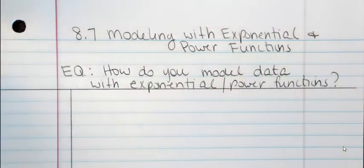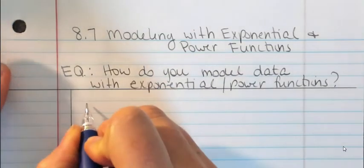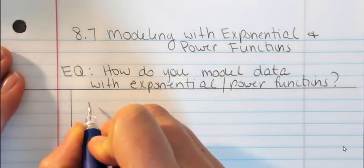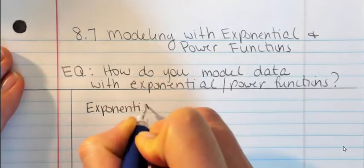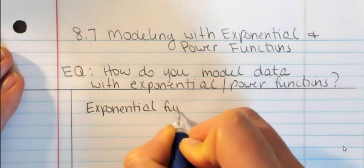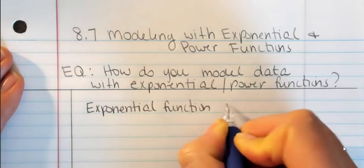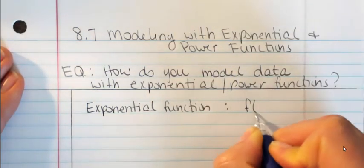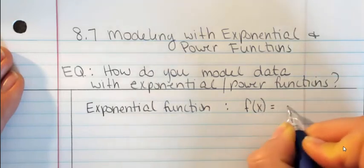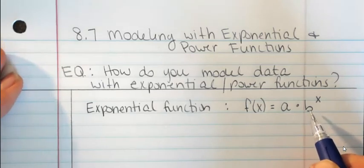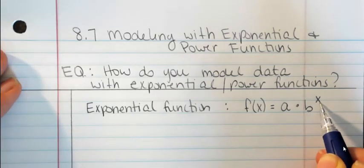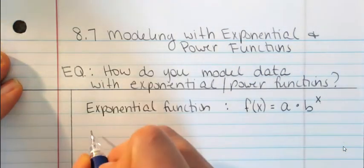Let's first differentiate between what an exponential function is and what a power function is. It's all about the placement of the variables. An exponential function is one where you have, for example, f of x equals a times b to the x power. Your base is some number, and then you're raising that to a variable power. That's an exponential function, and that's what we've been dealing with.